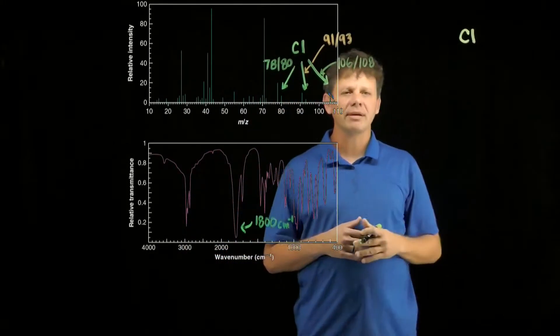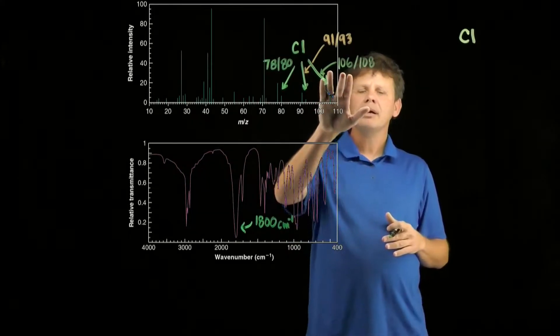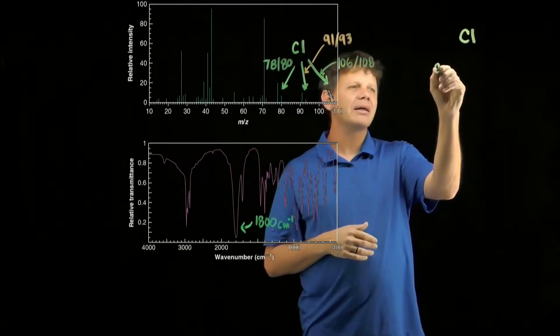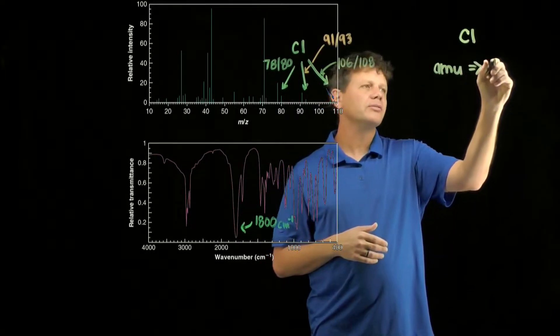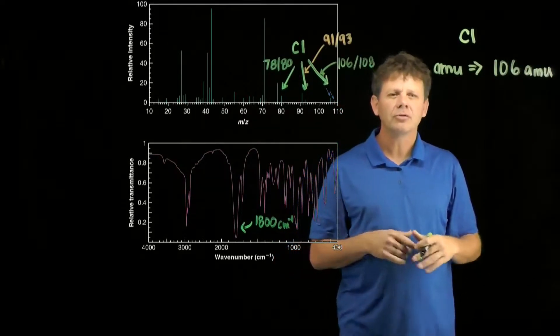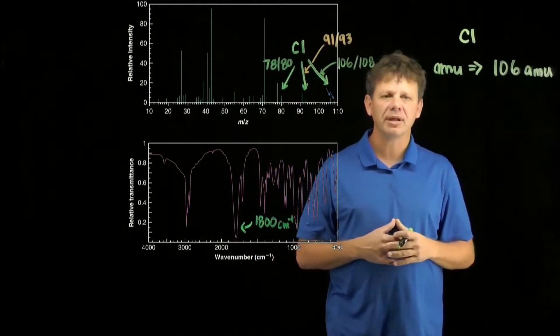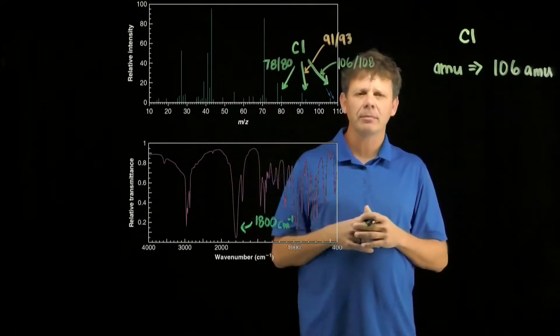We know we have a chlorine. The other thing we know with an M and M+2 of 106, we know that the atomic mass of the molecule is 106 atomic mass units. So when we get around to proposing a molecular formula, we're going to do it based on that.